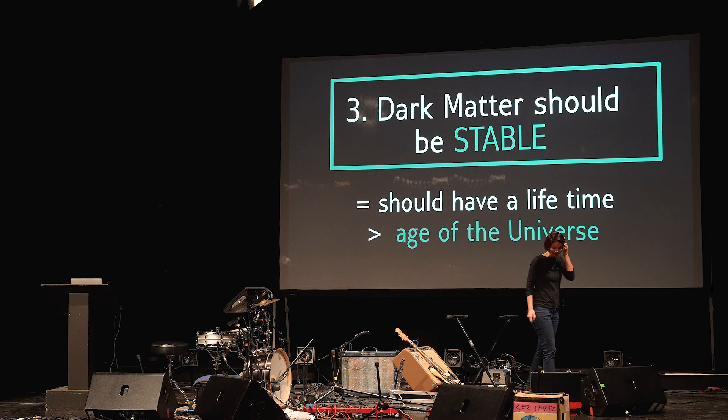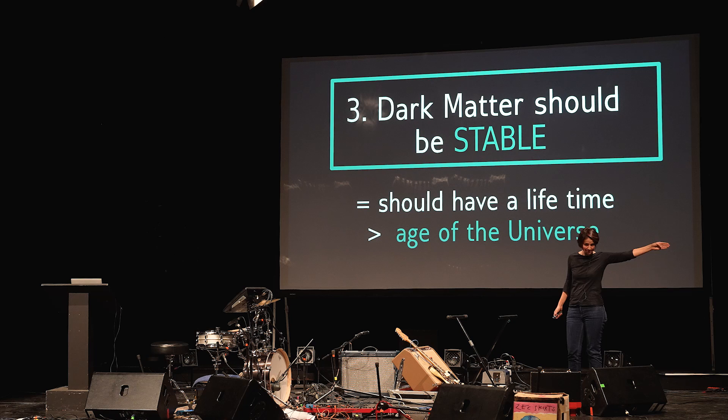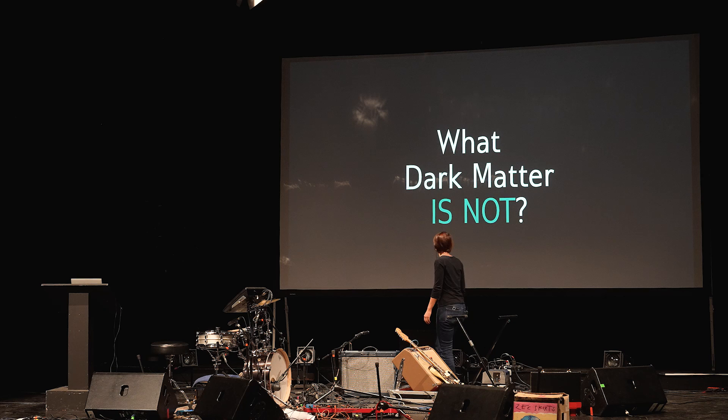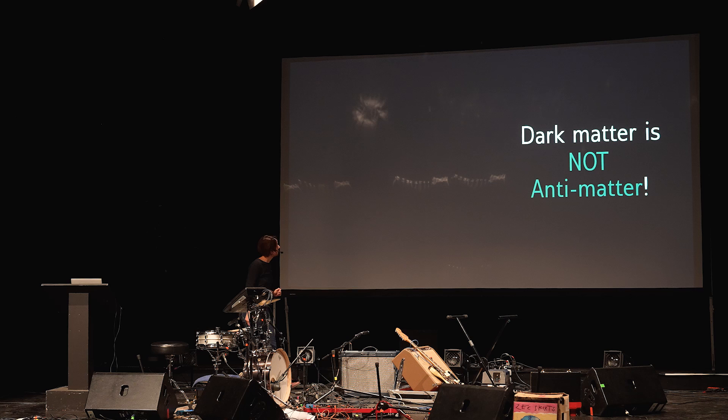Last point: the other thing we know is that dark matter is still around. We have a bunch of observations, as I showed, dating back from the epoch where the universe became transparent to light up until today, that tell us there is dark matter around us. So dark matter cannot have disappeared in between — it should have a lifetime larger than the age of the universe. We also know what dark matter is not. Dark matter is not antimatter. What is antimatter? Let's imagine you have a charged particle — what is its antiparticle? Its antiparticle has exactly the same mass and the same properties, except the opposite charge under electromagnetism.